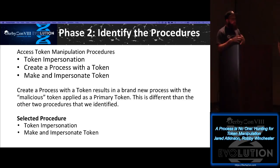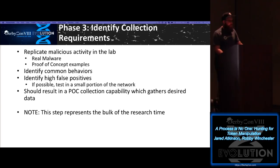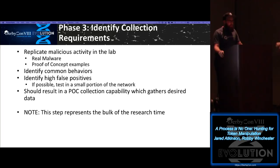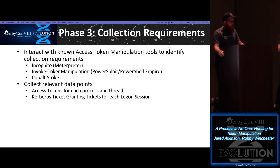So identify collection requirements — the third phase. The idea is to find some proof of concepts for these attack techniques, use them in a lab, and start getting an idea of how you might detect it and what data you need to collect. We might use real malware or proof-of-concept malware, open source things like Incognito and Metasploit, Empire's Invoke-TokenManipulation — tons of different options. We found that access tokens for every process and thread are very valuable for identifying this type of activity.